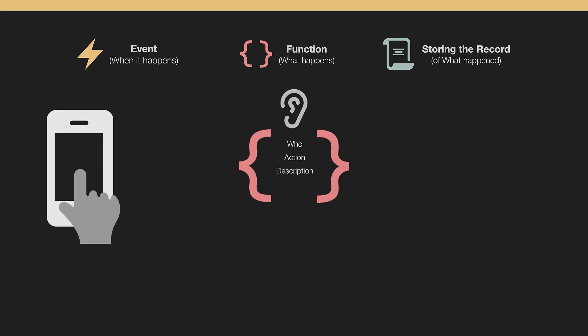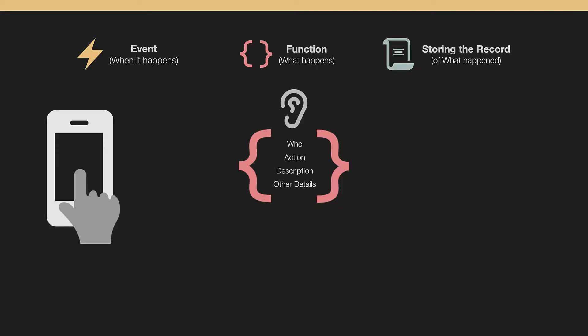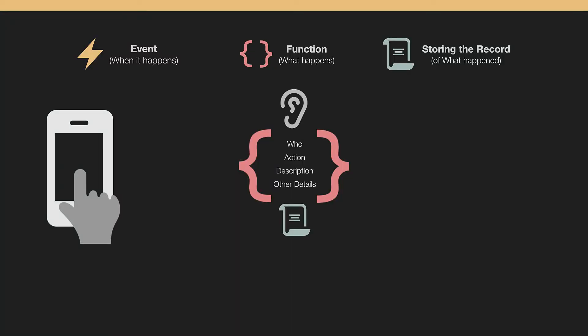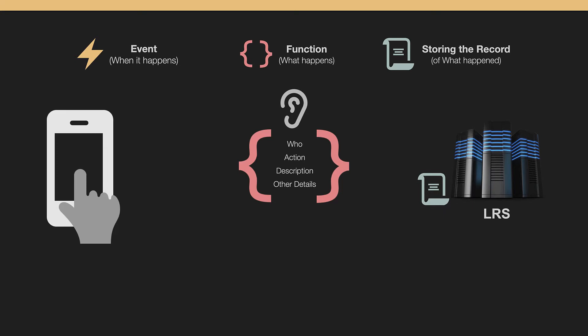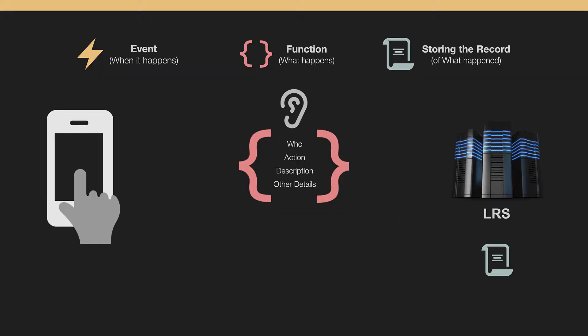It captures the action and describes it — what action did they do, why did they do it, and what's the description of that action. So you'd have something like 'Jeff downloaded a PDF' and which PDF it was. That's the description. You can also provide other details like results — did they pass a quiz? You can add metadata as an optional item as well. This record is usually in a format called JSON, and it gets sent over to the learning record store, which stores it as part of the learner's history.